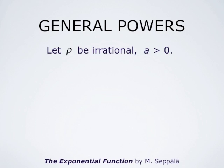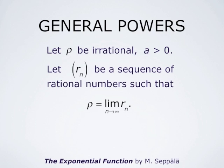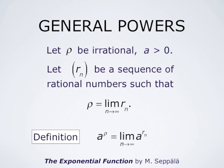We still have to define a to the power x for irrational numbers. If rho is an irrational number and a a positive number, we may find a sequence of rational numbers rn which converges to rho. We choose a sequence rn such that the limit of rn is rho, and then we define a to the power rho as the limit as n goes to infinity of a to the power rn. Now the function a to the power x is defined for both rational and irrational values of x.